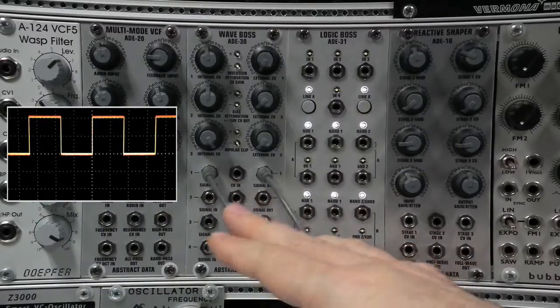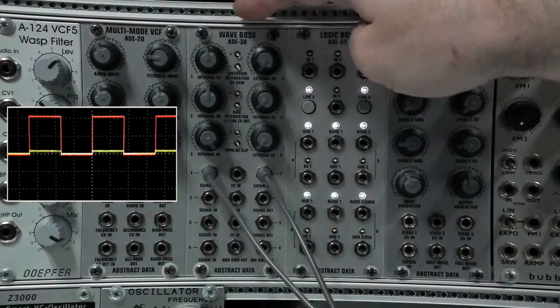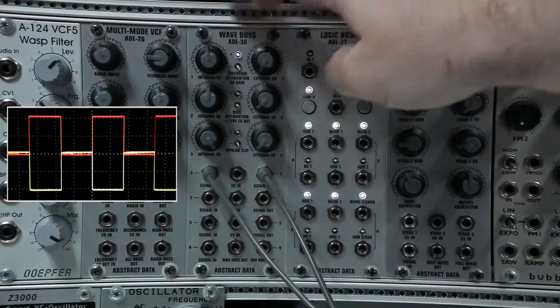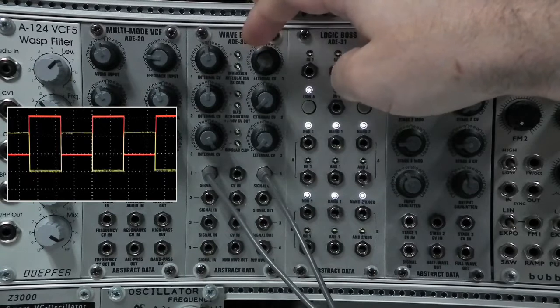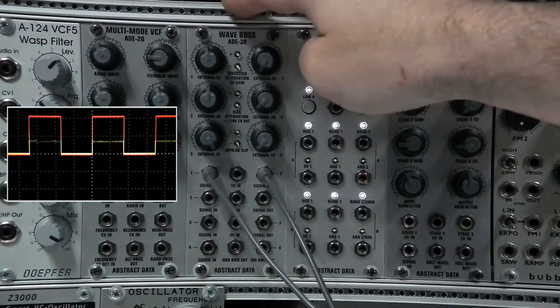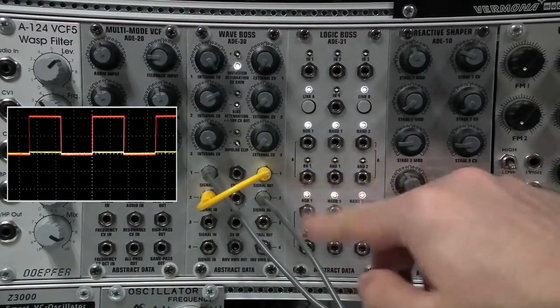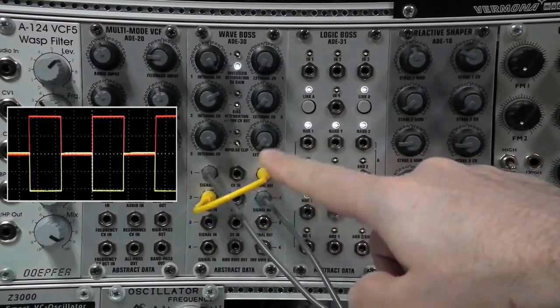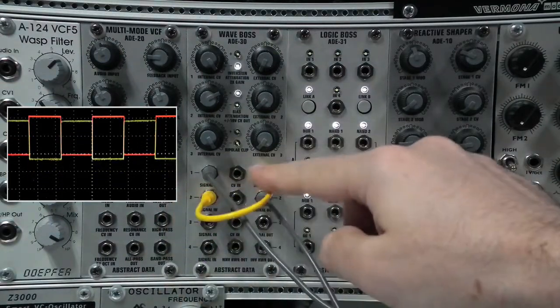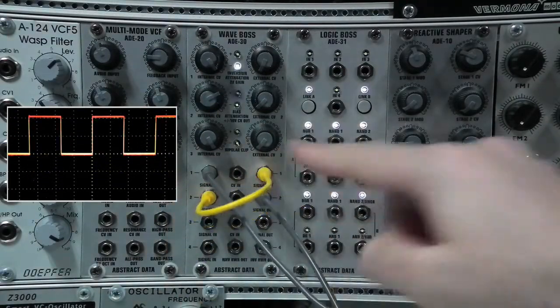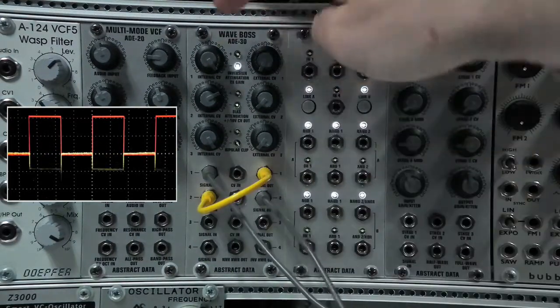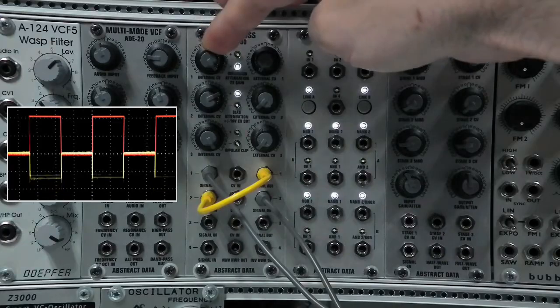One last little demonstration of how we can combine stages in the ADE30 to do a different job. My input here is a logic input. It's coming from the output of a Doepfer clock divider. What I'm going to do is a traditional logic inversion. So what I've done here is I've run the output of stage one into the input of stage two. I'm running an inverted version of this waveform out and then I've biased it up so that it is now a signal that goes between zero and 10 volts. But you can see that it is the inverted version now of the input.